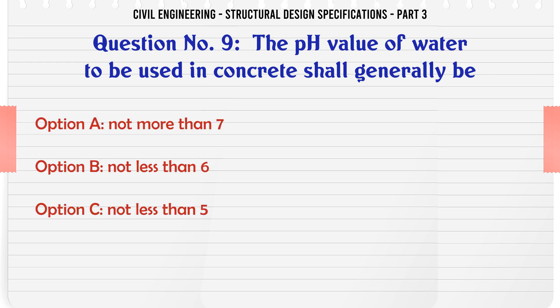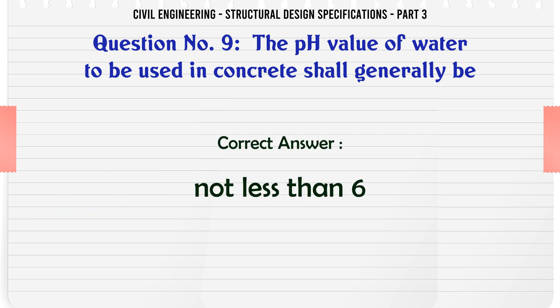Water to be used in concrete shall generally be: a. Not more than pH 7, b. Not less than pH 6, c. Not less than pH 5, d. Not more than pH 6. The correct answer is: not less than pH 6.